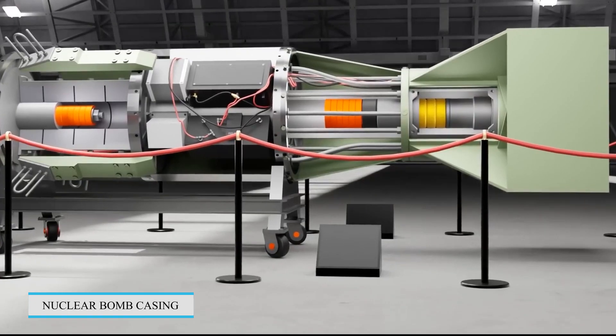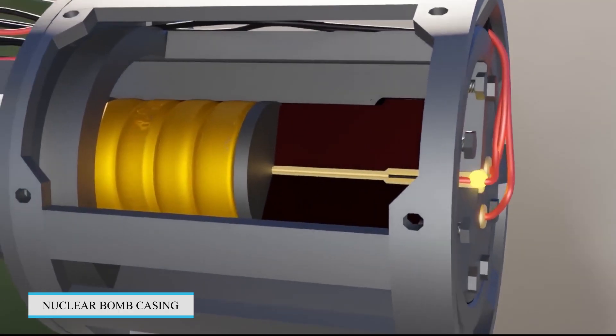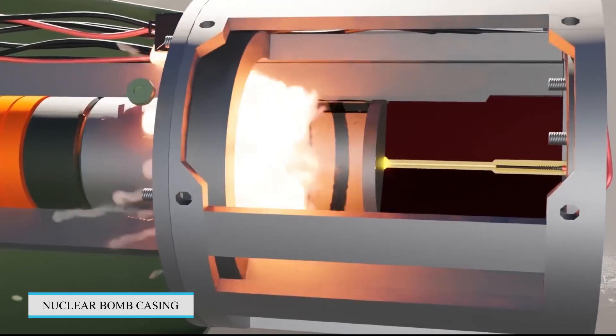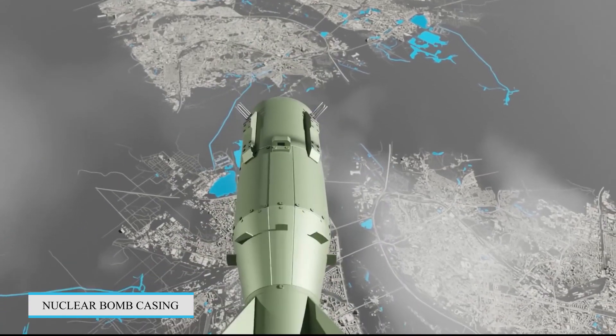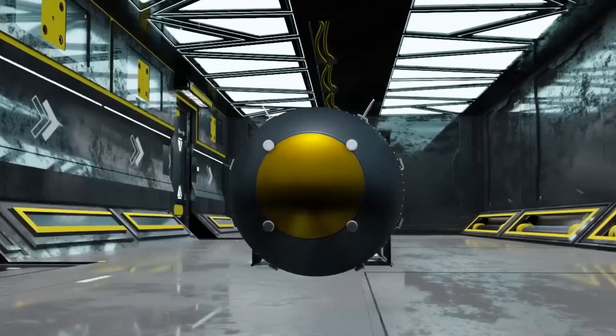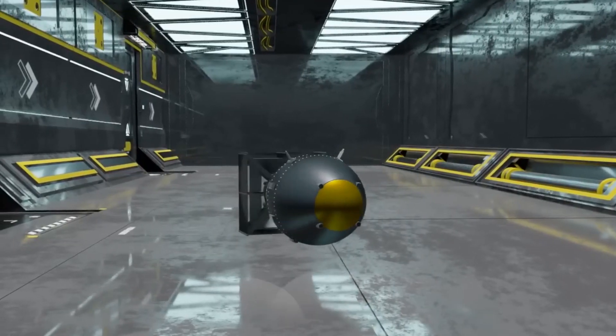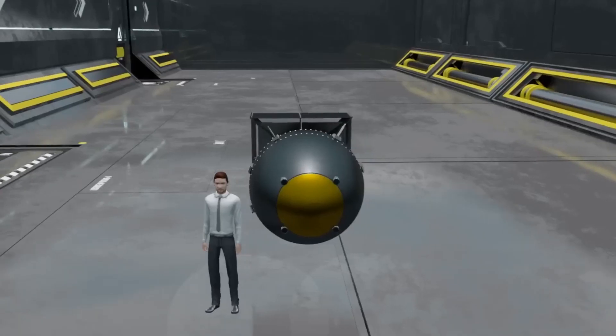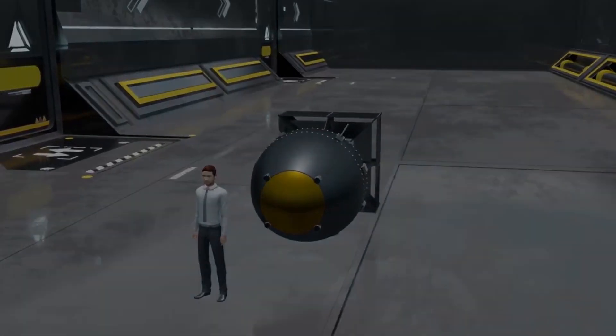Six, casing. The bomb is enclosed in a casing made of various materials, including metal or composite materials. The casing is designed to withstand the extreme pressures, temperatures, and forces generated during the detonation process and to help direct the explosion in a desired direction.